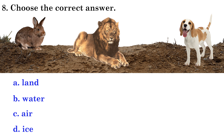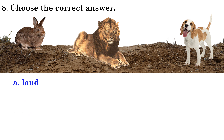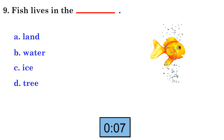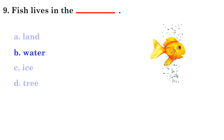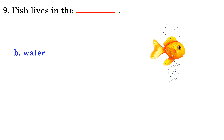Question 8: Choose the correct answer. A. Land. Question 9: Fish lives in the... B. Water.